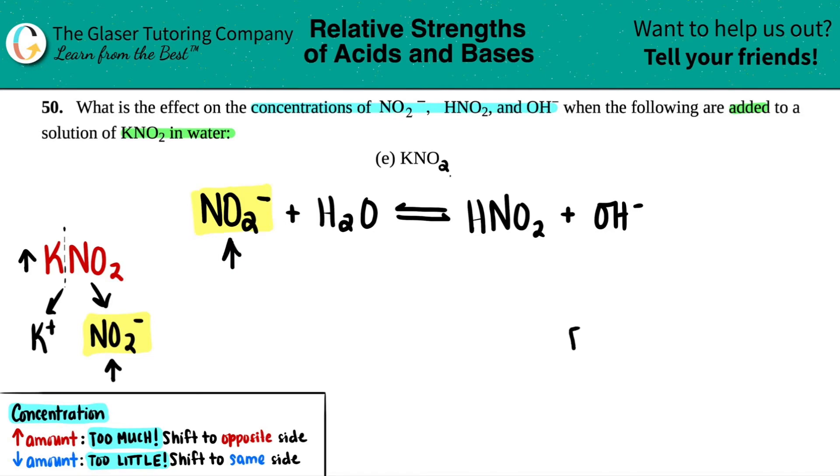So I answered my first answer, the concentration of NO2, right? They say, what's the effect on the concentration of NO2? That would increase. So I have one out of my three answers. Now I just have to figure out what's going on with the HNO2 and what's going on with the OH minus.